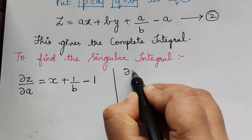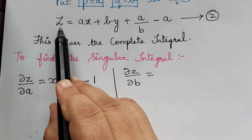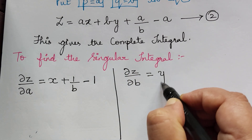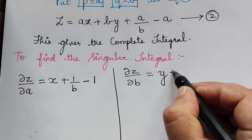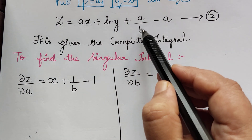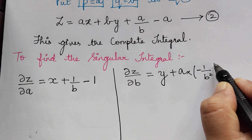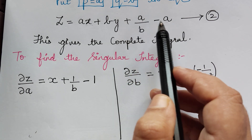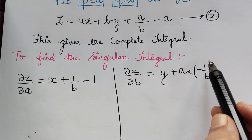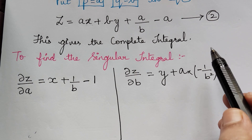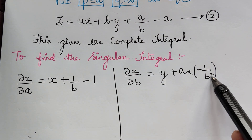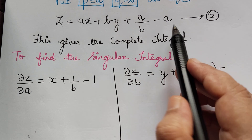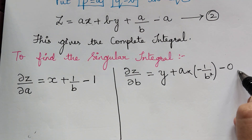In a similar way, we find dou z by dou b. Differentiating equation 2 partially with respect to b: the ax term becomes 0, the differentiation of b is 1 giving us y, and since a is treated as constant, we get a multiplied by the differentiation of 1 by b, which is minus 1 by b square. The differentiation of a with respect to b is 0. So dou z by dou b equals y minus a by b square.